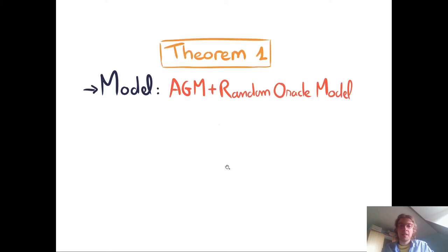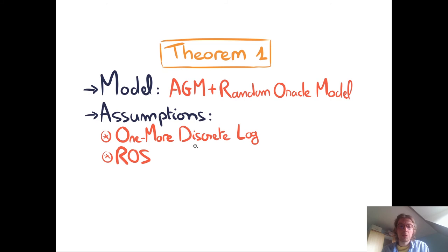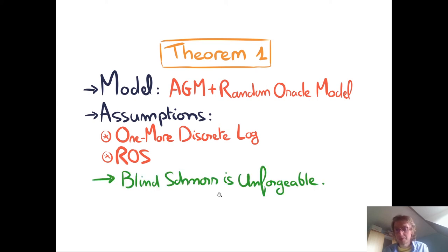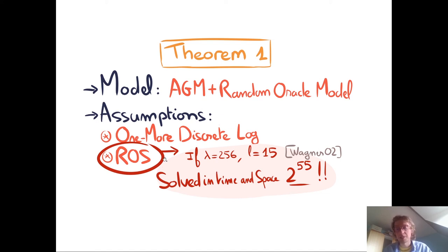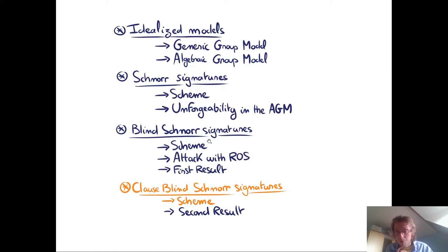The first result of our paper is that in the algebraic group model plus random oracle model, under the one-more discrete log assumption and the ROS assumption, Blind Schnorr is unforgeable. However, Wagner showed in 2002 that for fixed security parameters and L, the ROS problem can be solved in time and space 2^55, which is bad news for Blind Schnorr signatures. Since the ROS problem is not sufficiently hard, we introduce a fix: closed Blind Schnorr signatures.